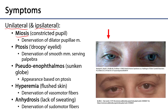Miosis is a constricting of the pupil. There are two sets of muscles which control the pupil: the dilator pupillae muscles and the sphincter pupillae muscles. The dilator pupillae muscles are under sympathetic control, so during a fight-or-flight response the pupils dilate, whereas the sphincter pupillae are under parasympathetic control. When the dilator pupillae muscles are denervated, that leads to unbalanced sphincter pupillae muscles, and therefore the pupils will constrict.